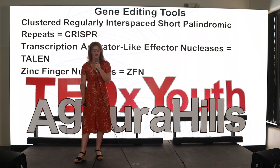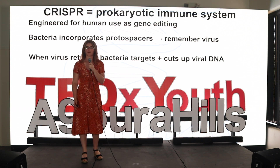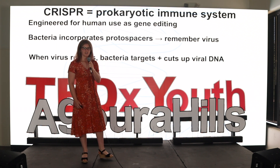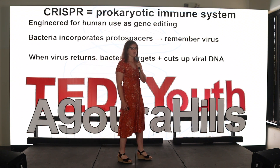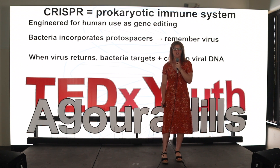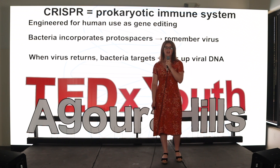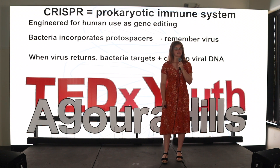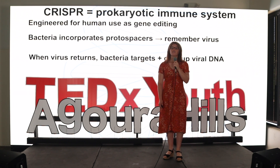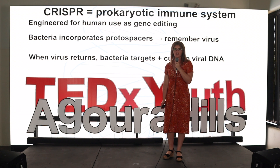CRISPR, which is the most widely known gene editing tool, is a prokaryotic immune system that has been engineered for human use in the form of gene editing. When a virus enters the bacterial cell, the CRISPR produces proto-spacers in order for it to remember the virus. When the virus returns, the bacteria produces short RNA sequences that are then able to target, cut up, and disable the viral DNA. This process of cutting up and finding specific DNA sequences is being researched for human use in the form of gene editing.